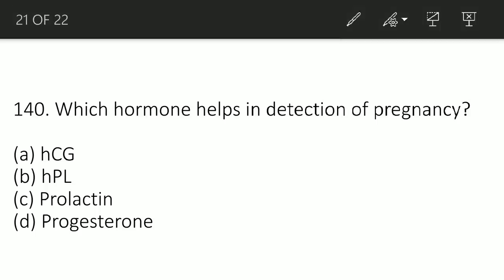Which hormone helps in detection of pregnancy? Options are hCG, hPL, Prolactin, and Progesterone. The correct option is option number A: hCG. The hCG level of less than 5 mIU/ml is considered negative for pregnancy, and anything above 25 mIU/ml is considered positive for pregnancy.